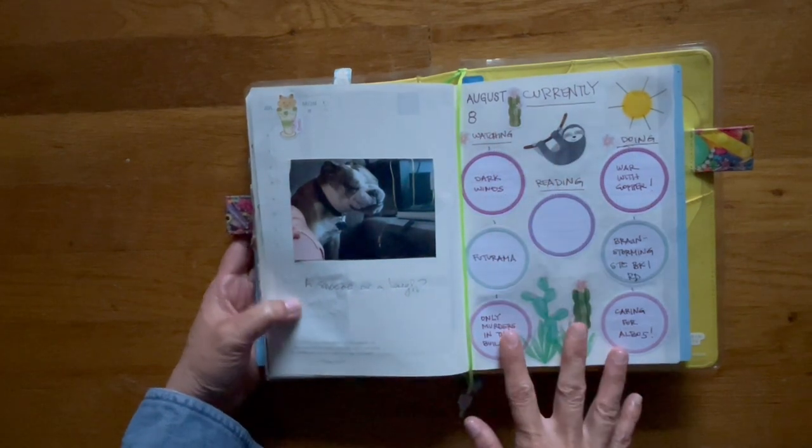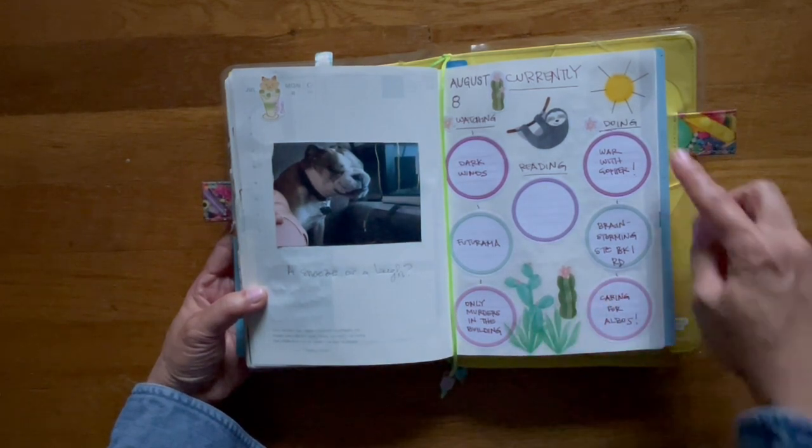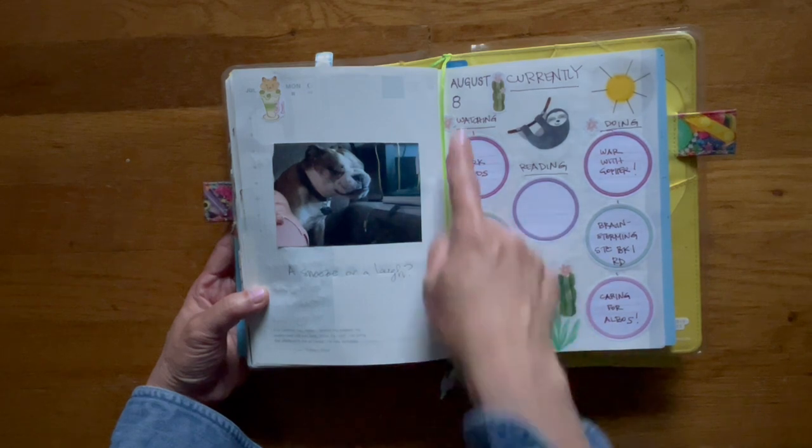So this is my currently page. This is what I am currently doing for August. This is doing, reading, and as you can see I don't have a book read yet. And then watching.